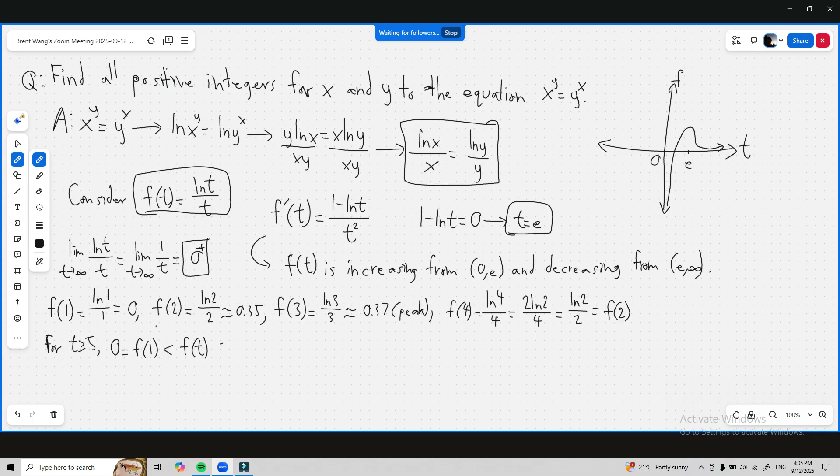Which is less than f of 2 equals f of 4, because when t is equal to 5 and onwards, it's never exactly less than 0 but it never reaches f of 2 or f of 4. Remember we're considering only positive integers. So this means,